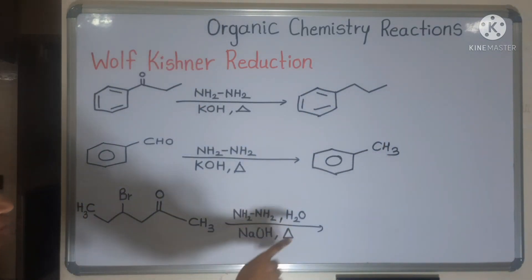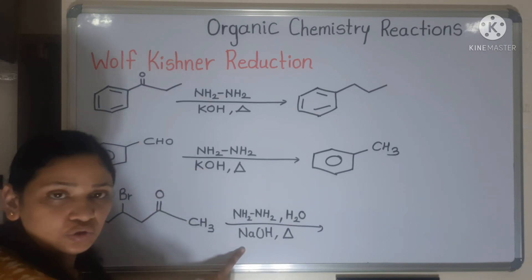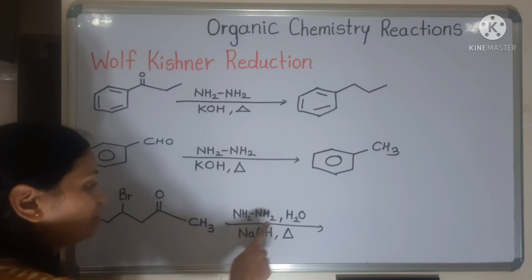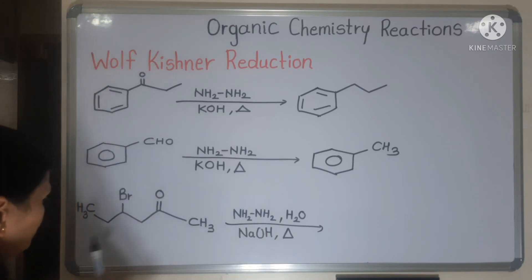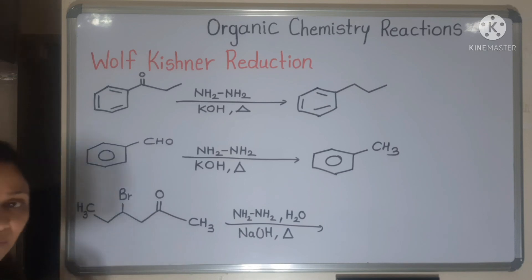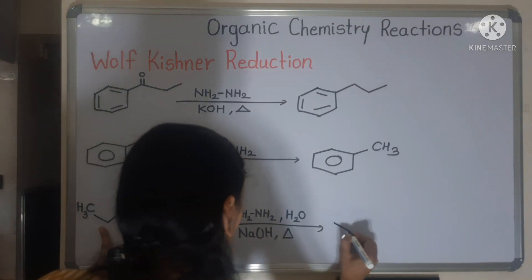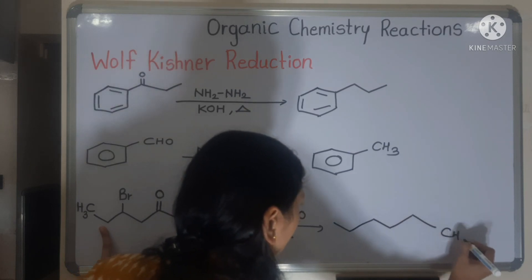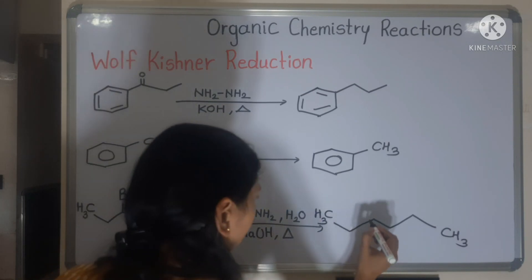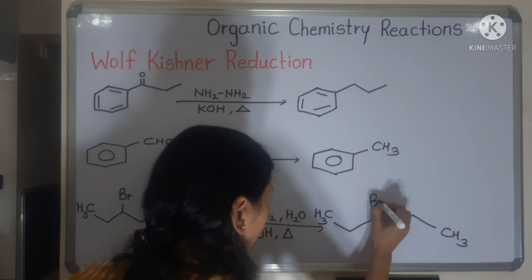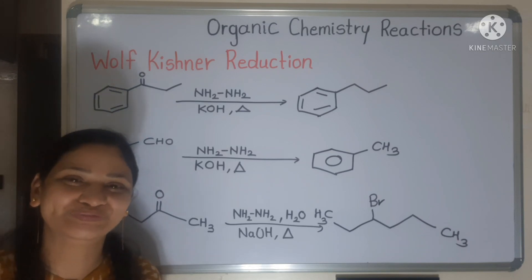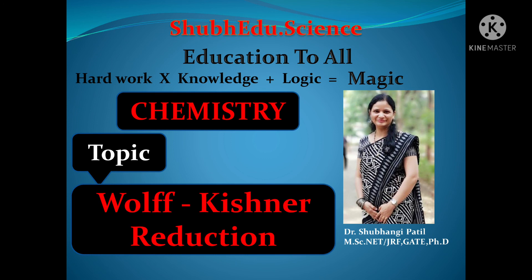Next example: NH2NH2, H2O, NaOH/KOH — this is the Wolf-Kishner reduction reaction. Here a bromine functional group is also present, but the reaction only affects the carbonyl group. So C=O becomes CH2; remaining portion stays the same. That is all about Wolf-Kishner reduction reaction. Don't forget to subscribe, like, and share. Thank you.